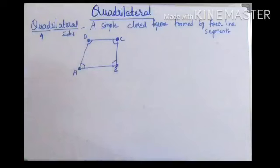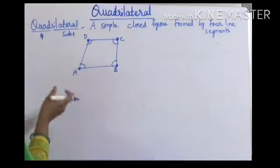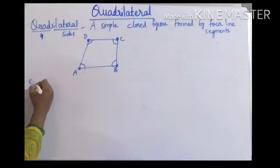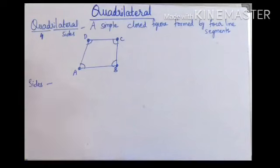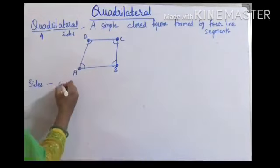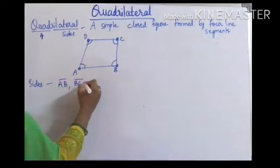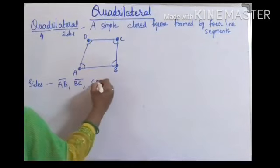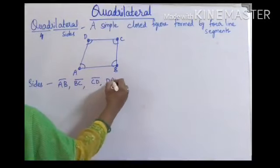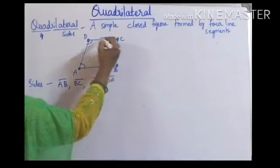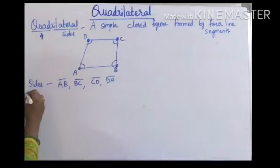Now I am going to write all the parts of the quadrilateral. The first one is sides — sides are nothing but the line segments of the quadrilateral. So here you are having 4 sides: AB, BC, CD, and DA.